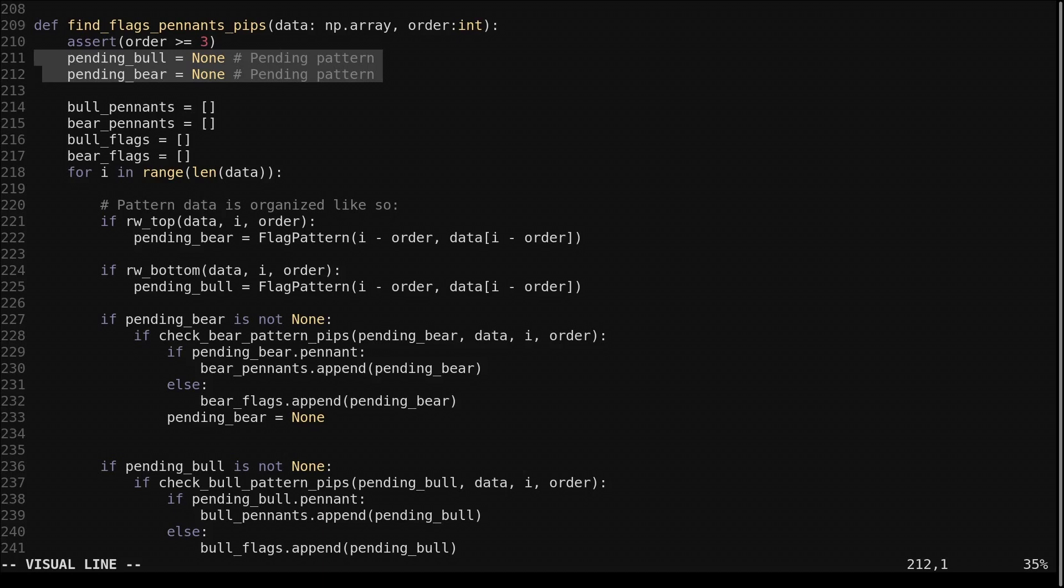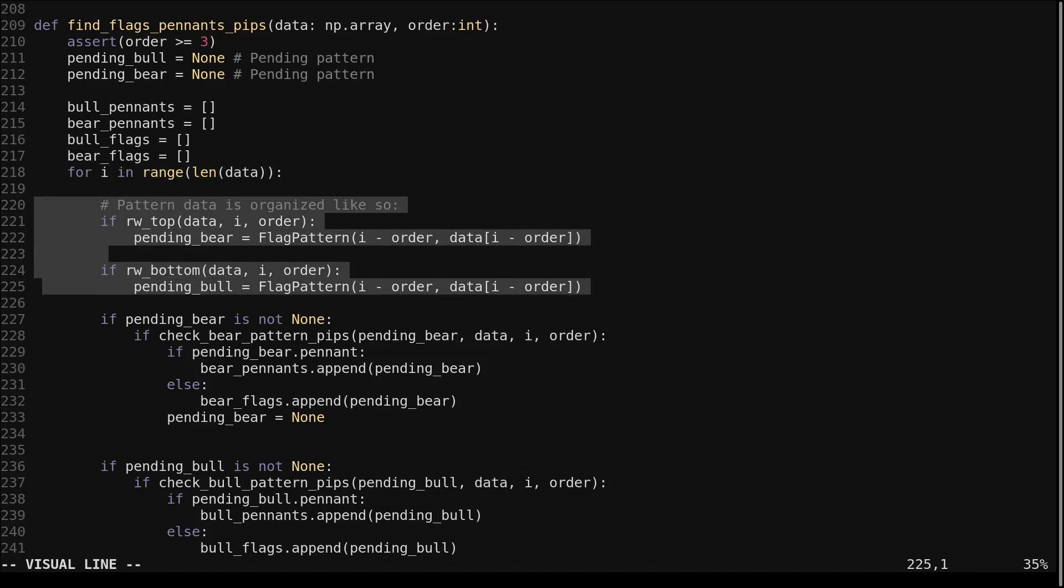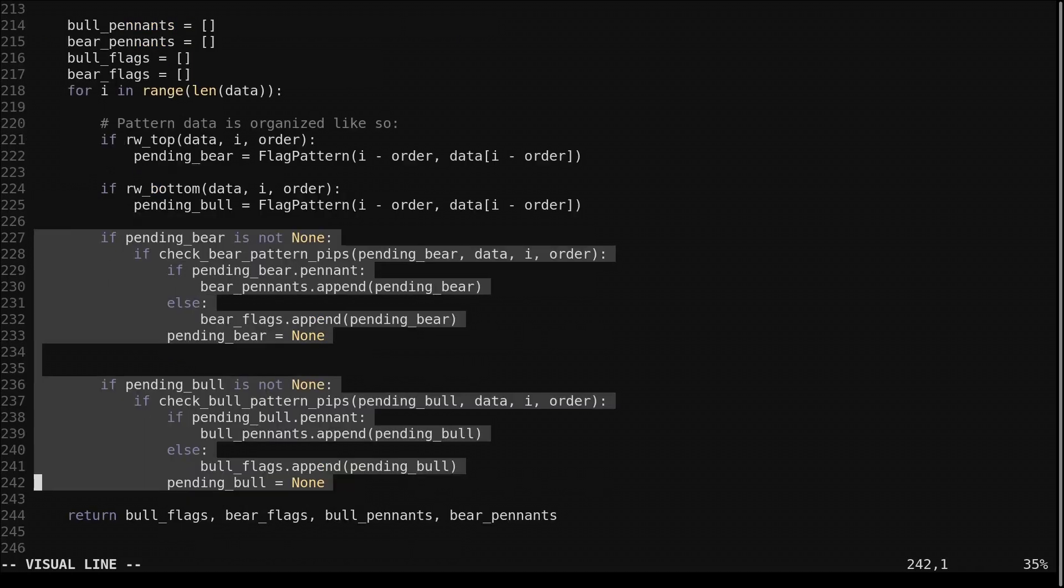As the pattern forms, its details are kept in these pending variables. If confirmed, the patterns are assembled in these lists. We loop through each candle in the data. At each bar, we check if there is a confirmed local top or bottom with the rolling window algorithm. If there is, we set the pending pattern's base at the found top or bottom. Bear flags are set at tops, and bull flags are set at bottoms. We use the functions check bear pattern pips and check bull pattern pips to see if the pending pattern is confirmed. They both return true on confirmation. If the pattern is confirmed, we record it into the proper list, and set the pending variable to none to avoid adding the same pattern multiple times.